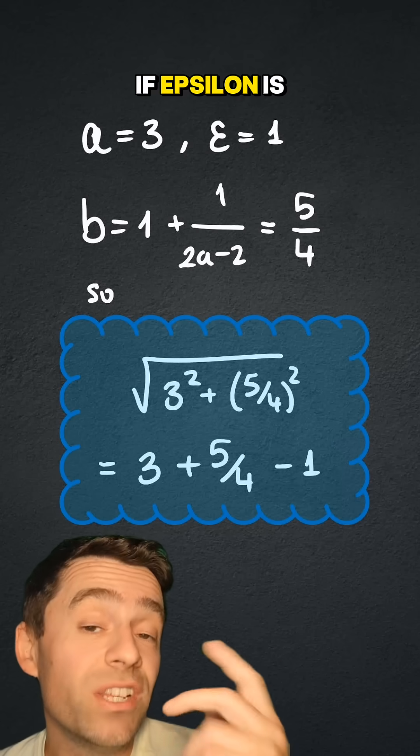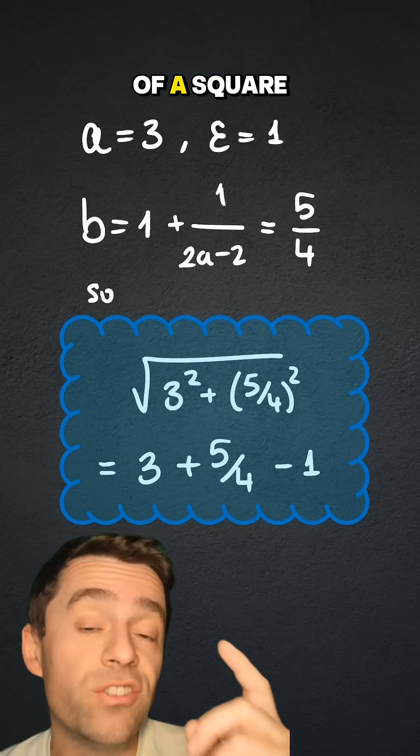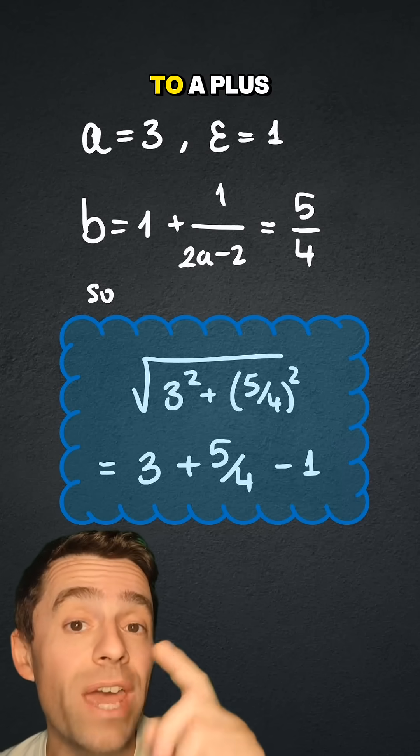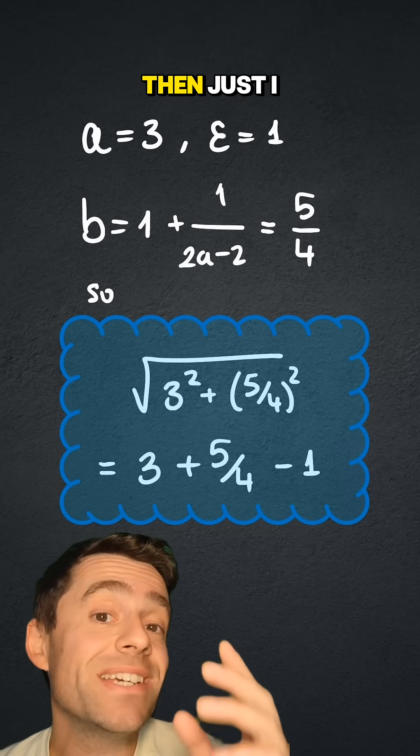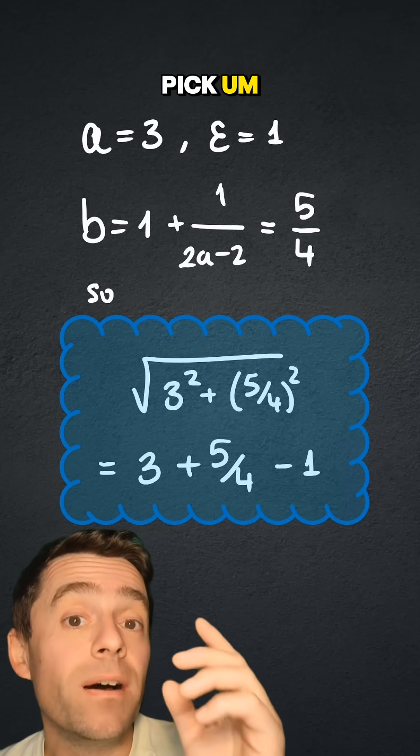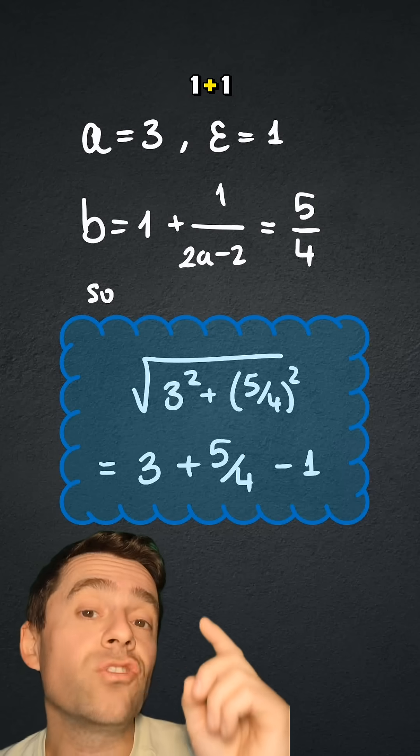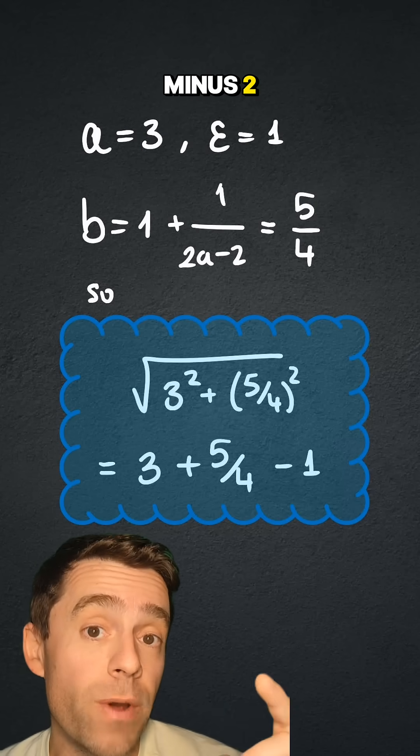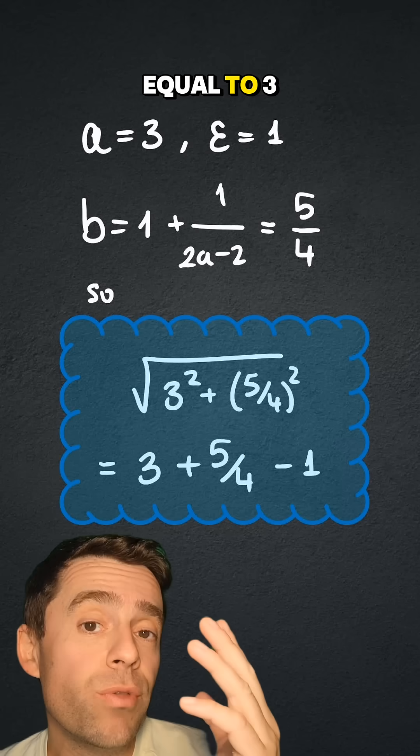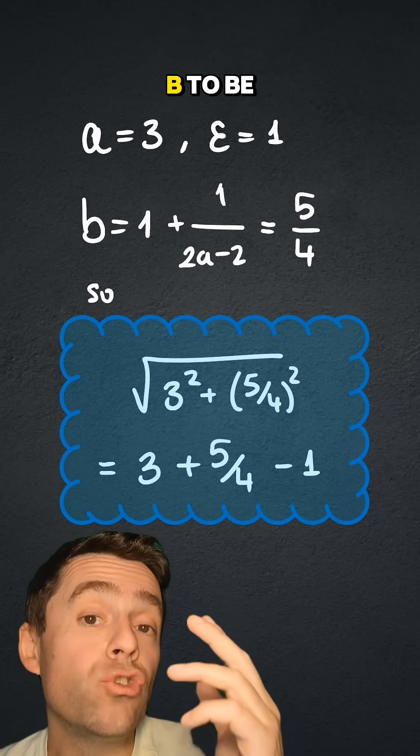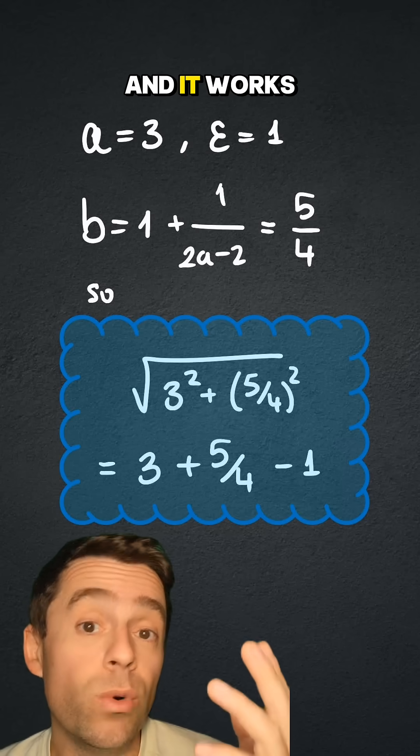So for example, if epsilon is 1, if I want the square root of a squared plus b squared to be equal to a plus b minus 1, then I just have to pick b to be 1 plus 1 over 2a minus 2. So for example, when a is equal to 3, I can pick b to be 5 fourths, and it works.